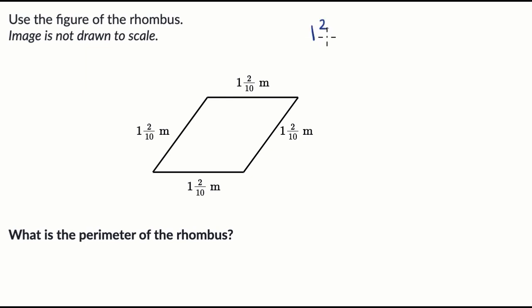So you could say that the perimeter is one and two tenths plus one and two tenths, plus one and two tenths. I think you see where this is going. Plus one and two tenths. You could do it like that. Or you could just say, hey, look, I have four of these one and two tenths. I'm adding them all together. This is going to be the same thing as four times one and two tenths.